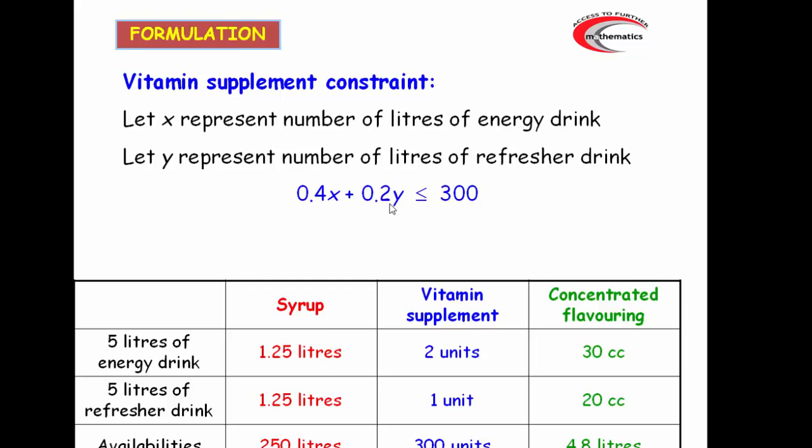Again, these aren't integer coefficients. This time, multiplying by five is a sensible choice, because five times 0.4 gives us two and five times 0.2 gives us one. So we end up with 2x plus y, and then we have to multiply the right hand side by five as well, equals 1,500. And the inequality is 2x plus y is less than or equal to 1,500.